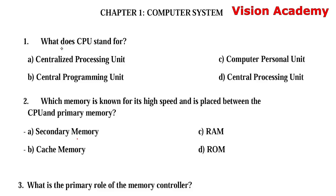Question number 1: What does CPU stand for? Option A: Centralized Processing Unit. Option B: Central Programming Unit. Option C: Computer Personal Unit. Option D: Central Processing Unit. The right answer is Option D, Central Processing Unit.